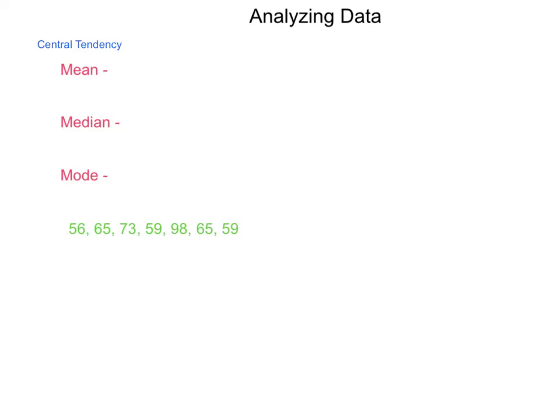For our next area of study in probability and statistics, we're going to learn how to analyze data. When we're looking at analyzing data, we talk a lot about the measures of central tendency. These are mean, median, and mode. Each of these should be a review of concepts you've learned in the past, but let's go over them real quick, beginning with mean.